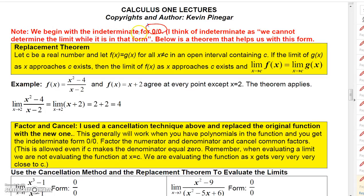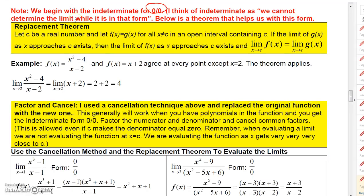We're going to start with the indeterminate form zero over zero. The trick in evaluating limits with this form is to find a replacement function. The Replacement Theorem says: let C be a real number and let f(x) = g(x) for all values except C in some open interval containing C. If the limit of g(x) as X approaches C exists, then the limit of f(x) exists and the two limits are equal.